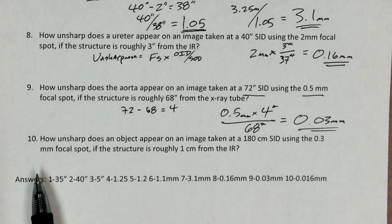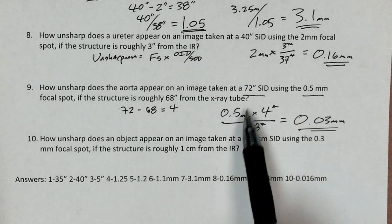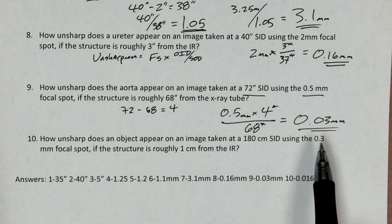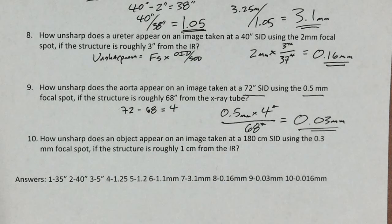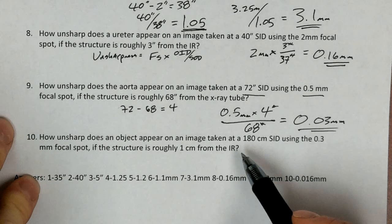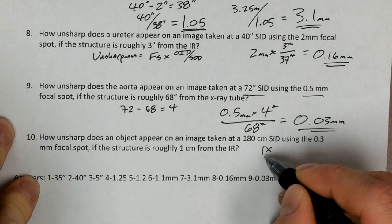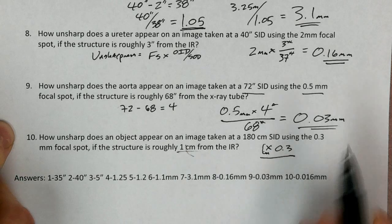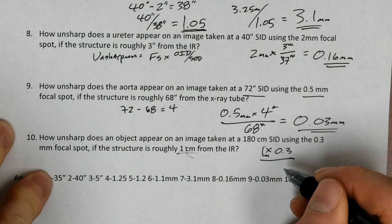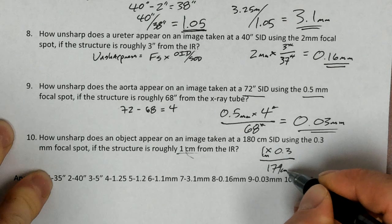So how unsharp does an object appear on an image taken at a 180 centimeter SID, which is roughly the same SID as this one up here, using a 0.3 millimeter focal spot size, so a smaller focal spot, and roughly one centimeter from the image receptor, so a decreased OID. So we would hope to see something, yet again, even smaller than this last one that we solved for. So we're expecting to see a smaller number. So let's set this up 1 centimeter times 0.3. And that's just using the image receptor distance here. Now, they didn't even give us the SID, but we'll subtract 180 minus 1 will give us the SOD, and it's 179 centimeters. And so the centimeters cancel out.